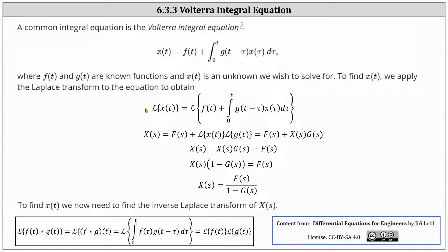On the left, the Laplace transform of x of t is equal to big X of s. On the right, the Laplace transform of f of t is equal to big F of s. And then we have plus the Laplace transform of the integral, which is the definition of the convolution of x of t and g of t, which when we use the formula is equal to the Laplace transform of x of t times the Laplace transform of g of t.